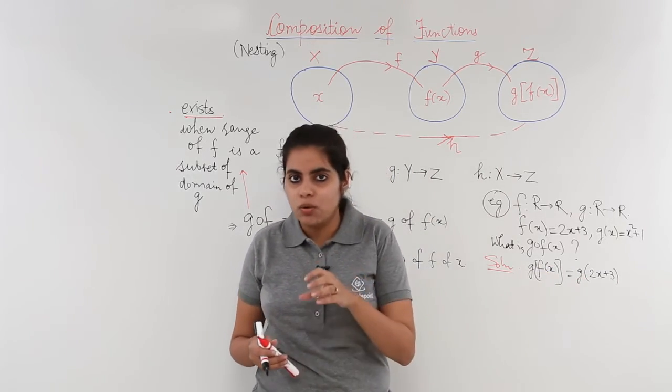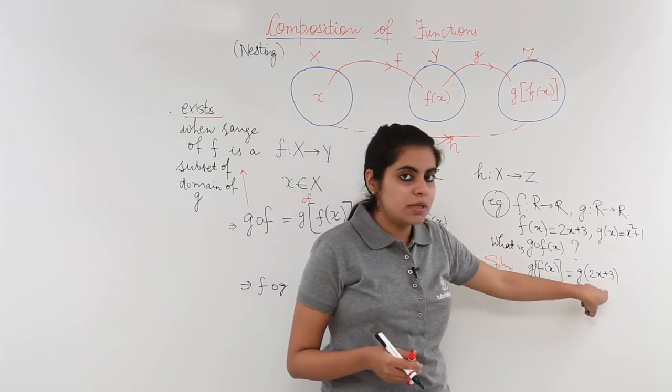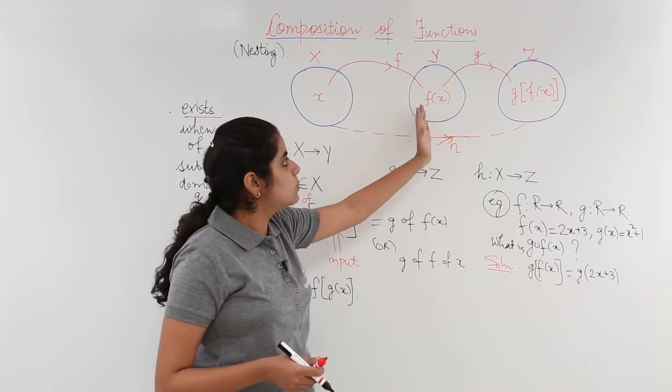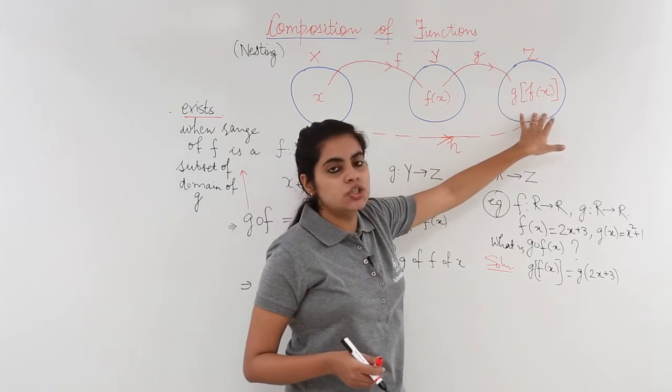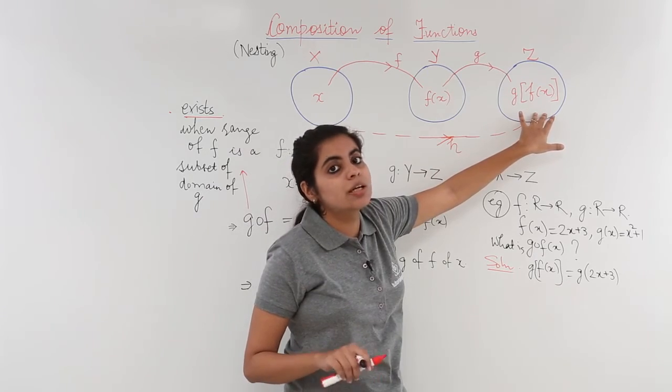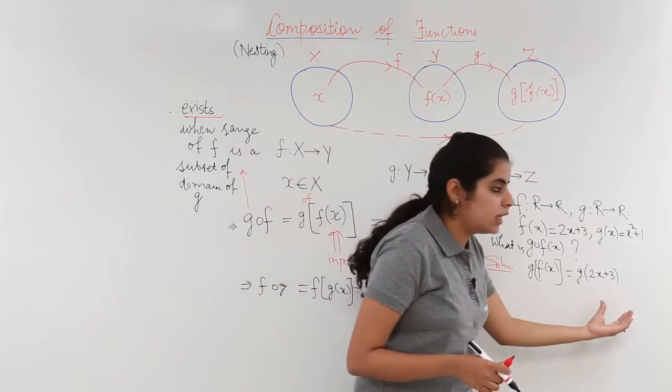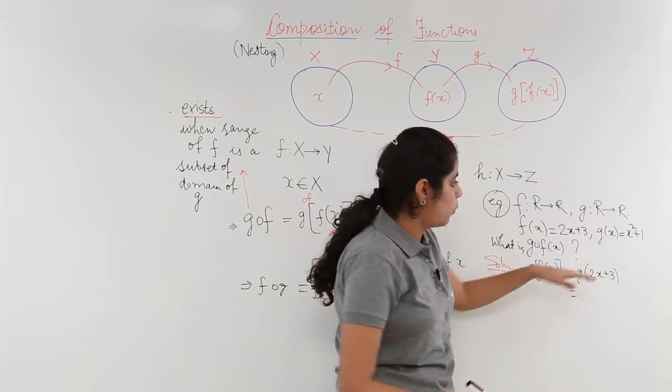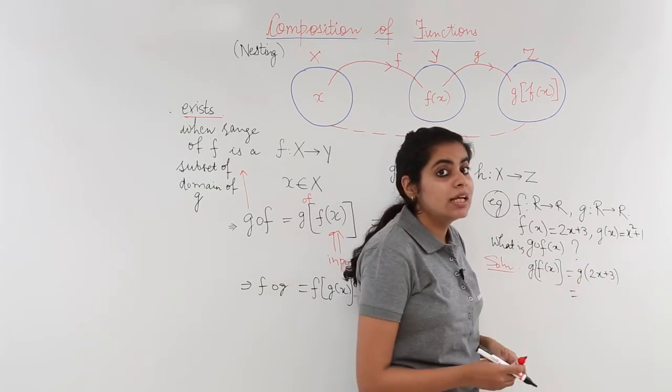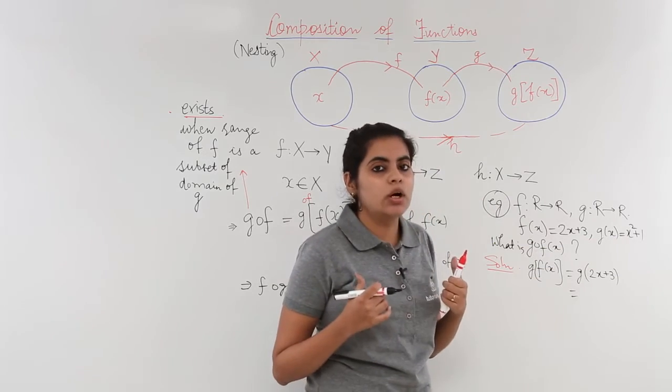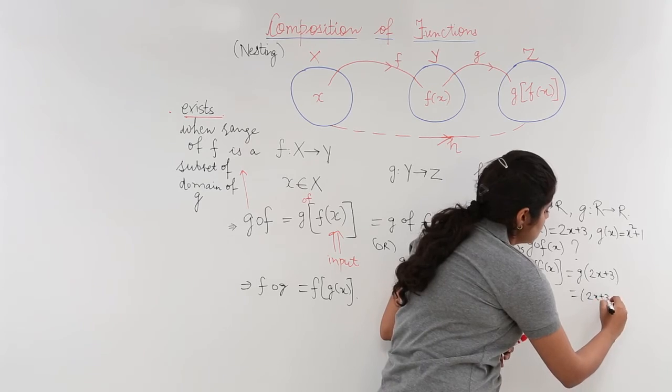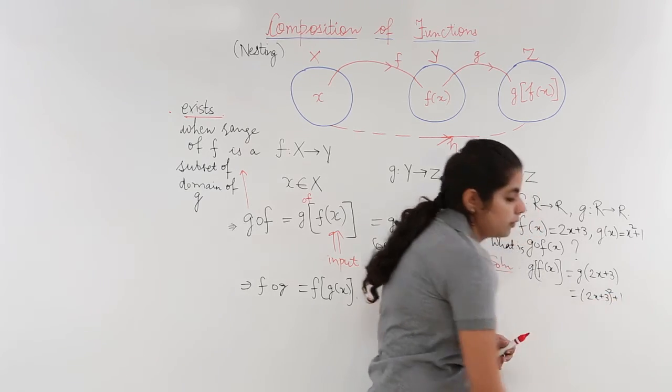That means now this 2x + 3, suppose now this f(x) is 2x + 3, 2x + 3 is serving in as input and will turn the question completely. So this 2x + 3 will go into g. 2x + 3 go into g. What is g? x² + 1. That means x will now be replaced by 2x + 3. So it becomes (2x + 3)² + 1.